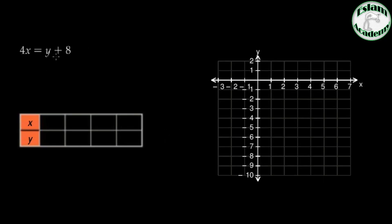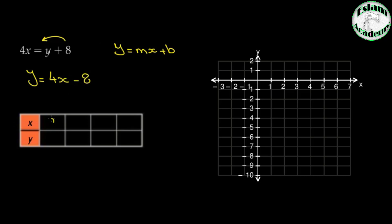Number 3: 4x = y + 8. As before, we write the relation in the form y = mx + b. By subtracting 8, we get y = 4x minus 8. Choosing values x = 0, 1, and 2: 4 times 0 gives 0 minus 8 equals negative 8; 4 times 1 gives 4 minus 8 equals negative 4; 4 times 2 gives 8 minus 8 equals 0.